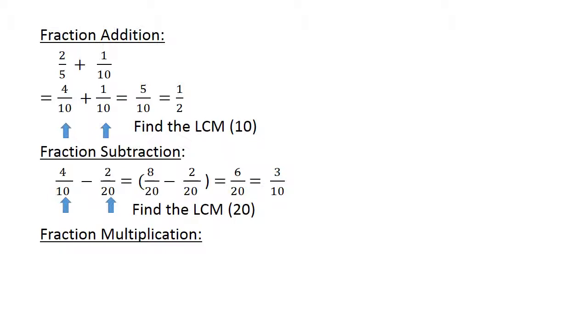Fraction multiplication. 7 over 8 times 3 over 4. 7 times 3 is 21, 8 times 4 is 32, and you have 21 over 32.